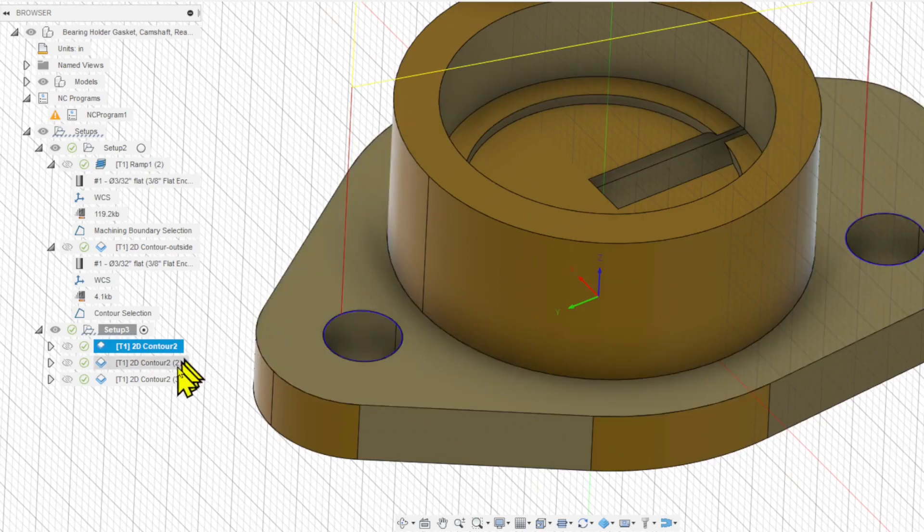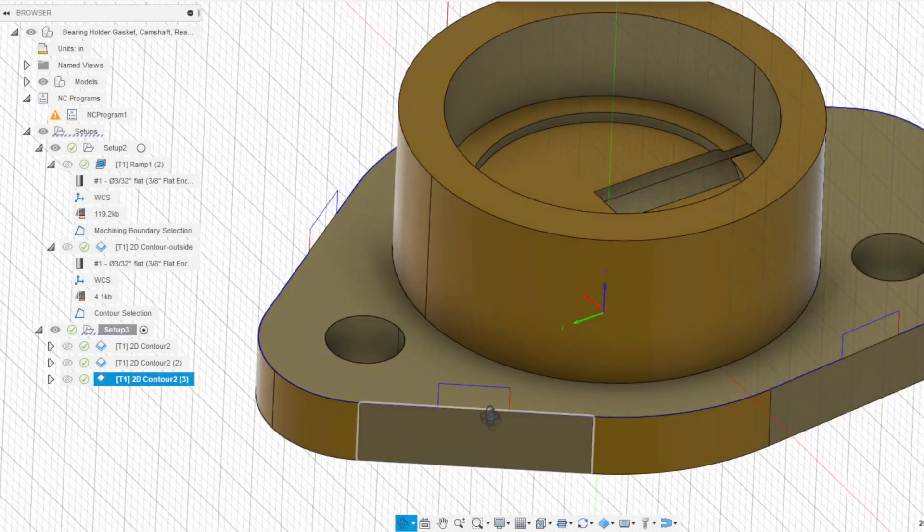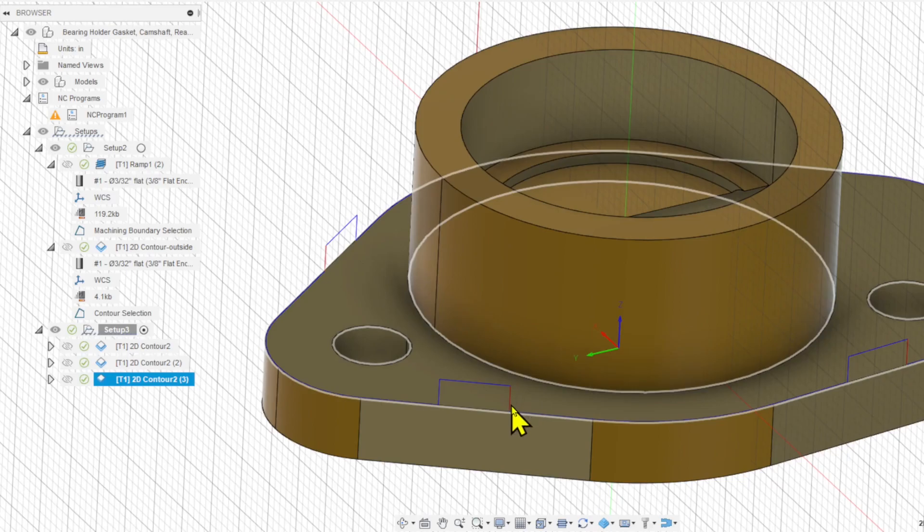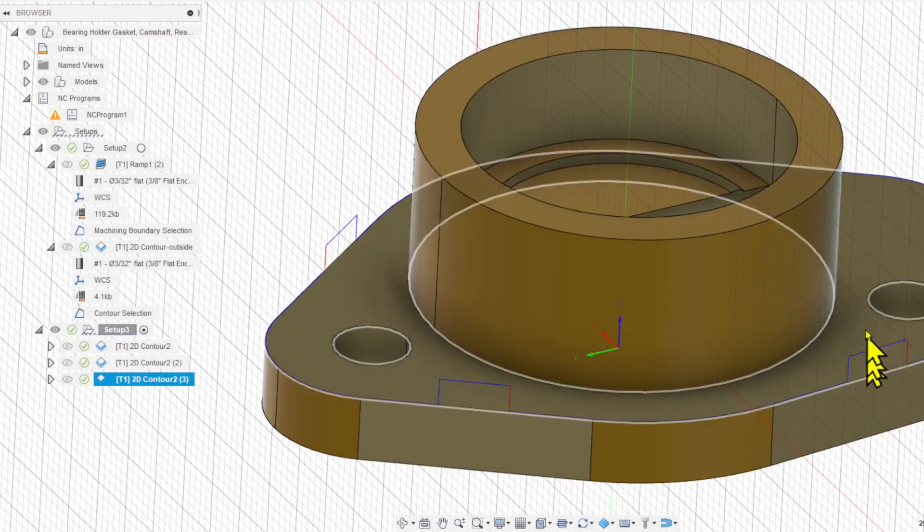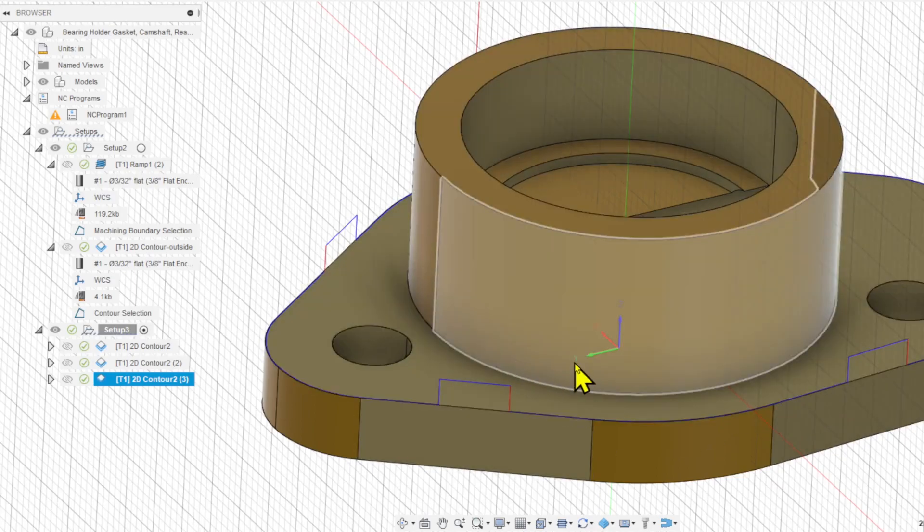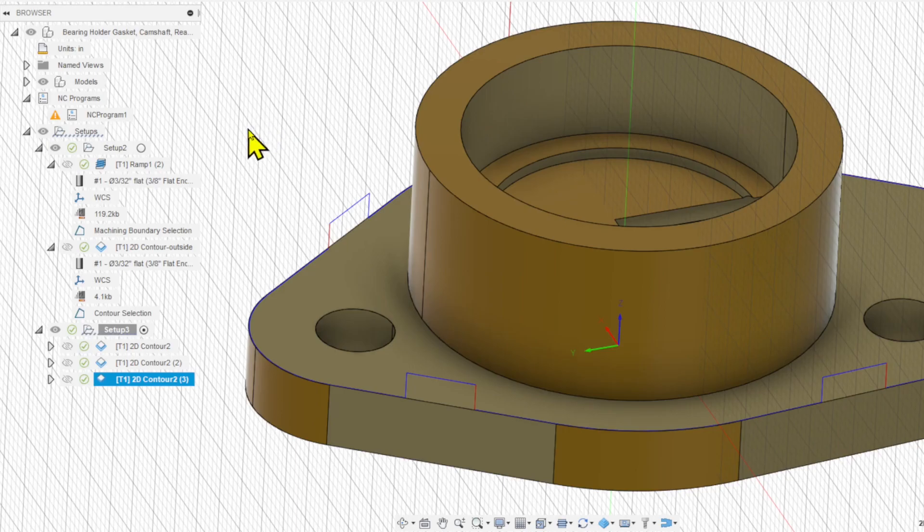The thing I like about the contour operation is it allows you to cut tabs when you cut the contour. And what that'll do is it'll leave a little piece of material here so this internal piece remains attached and doesn't get tangled up in the cutting operation. Let's export this G-code, run it on the CNC machine, and see what our gasket looks like.